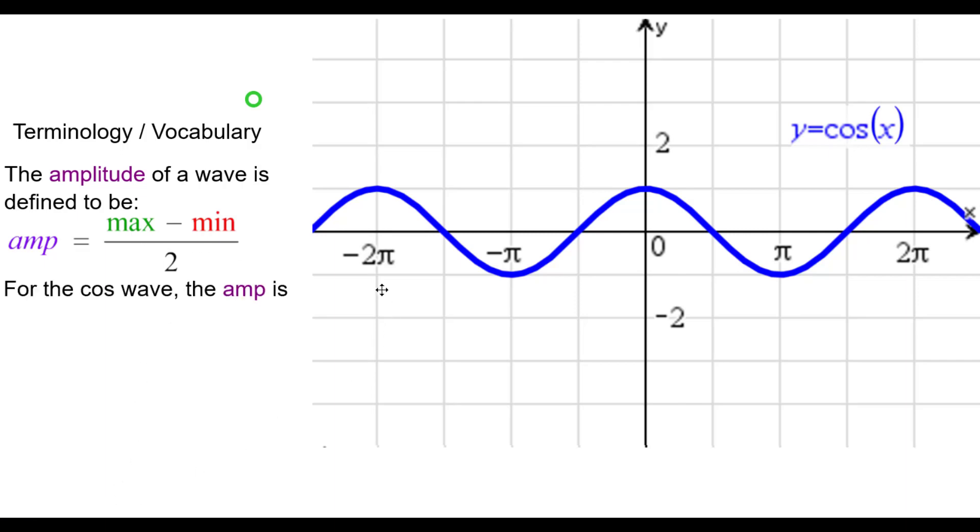So for the cosine wave here, the amplitude is going to be the maximum, 1, minus the minimum, negative 1, and then divide that by 2. So we'll just substitute those values here. And doing the arithmetic, 1 plus 1 is 2, divided by 2 is 1. So the amplitude of this cosine curve is 1.